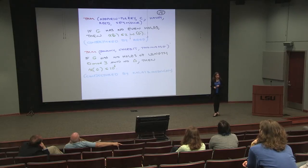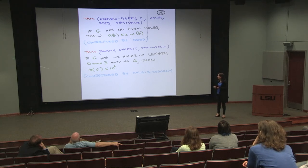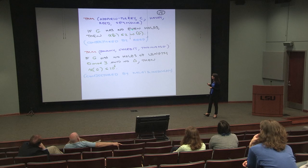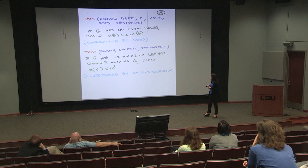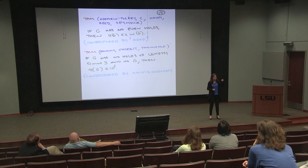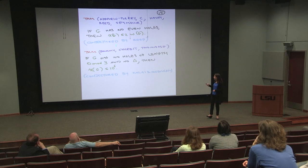It turns out this is a good avenue to explore, and there were some theorems. If you forbid all even holes — C4, C6, C8, and so on — then you get a chi-bounded family; in fact chi is at most 2·omega. The proof is that in every graph with no even hole, there is a vertex whose neighbourhood is a union of two cliques, and then by a degeneracy argument it follows that they are chi-bounded by this function.